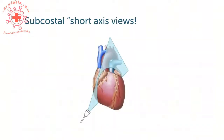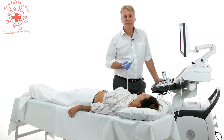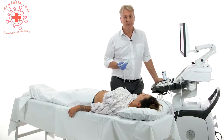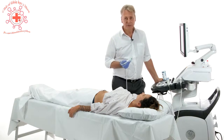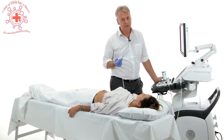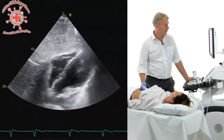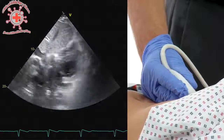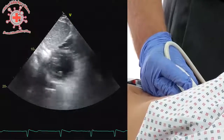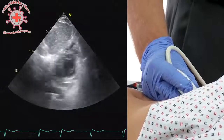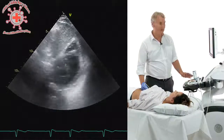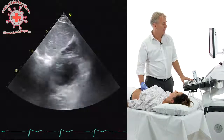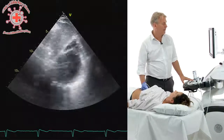Sometimes the subcostal view is the only image window available, and to demonstrate all structures of the heart you have to be creative — there is more to the subcostal window than the four chamber view. Starting from the four chamber view and rotating the transducer, all of a sudden you get a short axis view of the left ventricle. This looks very much like the parasternal short axis view, with the right ventricle and left ventricle visible, allowing you to assess circular or radial function and scan the ventricle from base to apex.